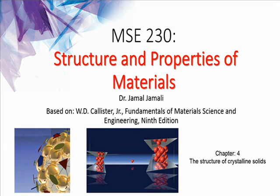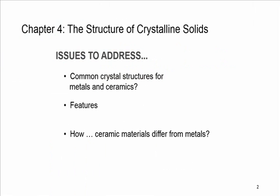In this lecture we talk about chapter 4, which is the structure of crystalline solids. In this chapter we will talk about crystal structure for metals and ceramics. We'll talk about features like density along a plane or along a certain direction, and how the crystal structure of ceramics is different from that of metals.